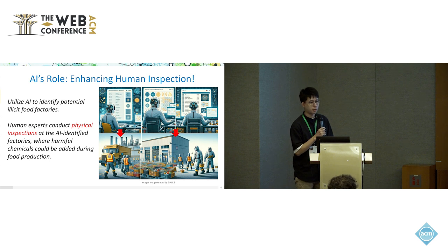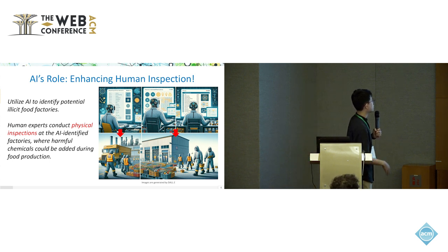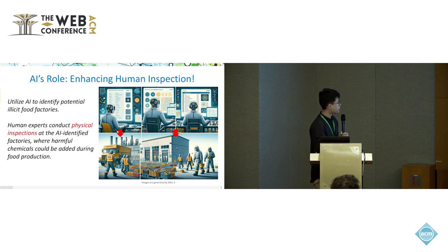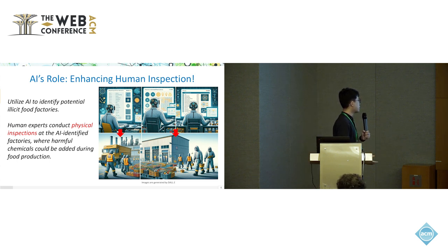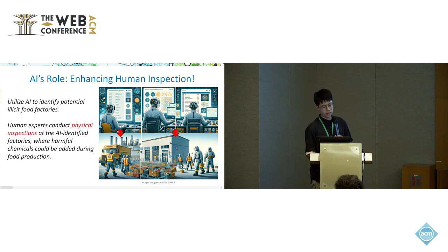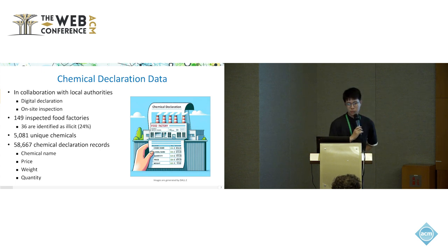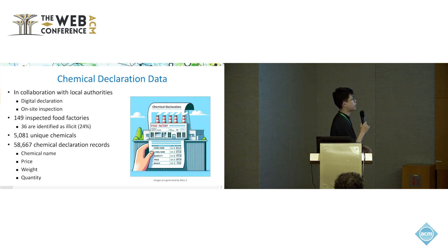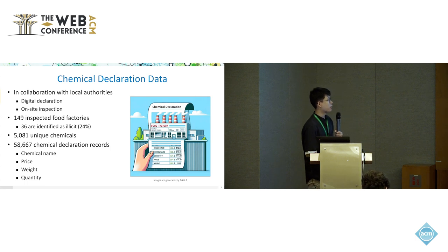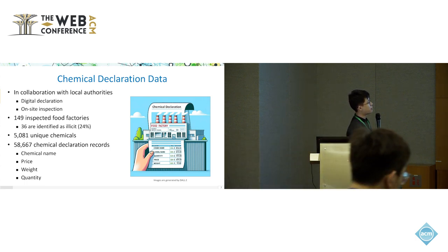Let's take a look at the chemical declaration data. We actually collaborate with some local authorities who have their digital declarations and inspection results. In total, we have 149 inspected food factories, 36 of which were illicit, around 5,000 unique chemicals, and the declaration records include chemical names, price, weight, quantity, etc. The data spans from around 2020 to 2022. The figures on the left show quantities of trades, and the red bars on the right show the anomaly rate for each declaration record, ranging from about 25% to 50%.